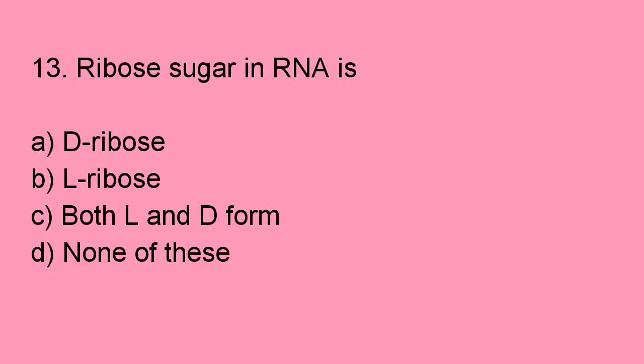Next question: The ribose sugar in RNA is D-ribose. Option A is right.